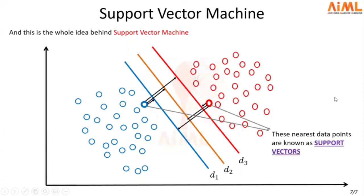That is the whole idea behind support vector machines. Support vector machines try to find the decision boundary which has the maximum distance from the closest data point of both the clusters. Those closest data points are called support vectors — and that is why the name of this algorithm is support vector machines.